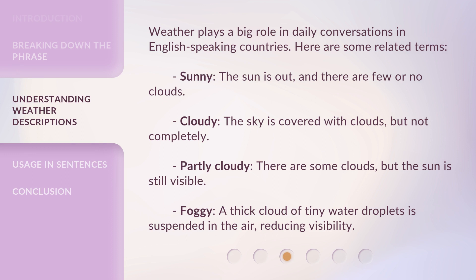Weather plays a big role in daily conversations in English-speaking countries. Here are some related terms. Sunny: the sun is out and there are few or no clouds. Cloudy: the sky is covered with clouds, but not completely. Partly cloudy: there are some clouds, but the sun is still visible. Foggy: a thick cloud of tiny water droplets is suspended in the air, reducing visibility.